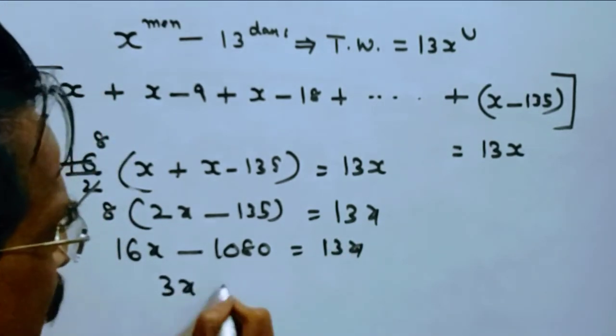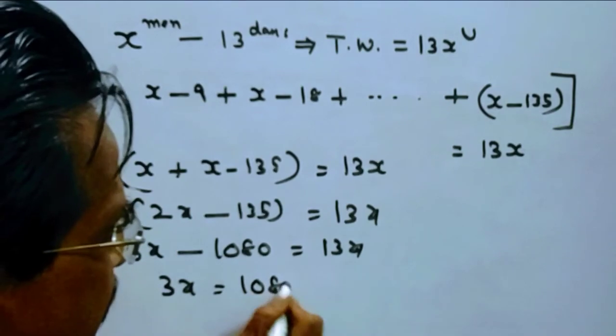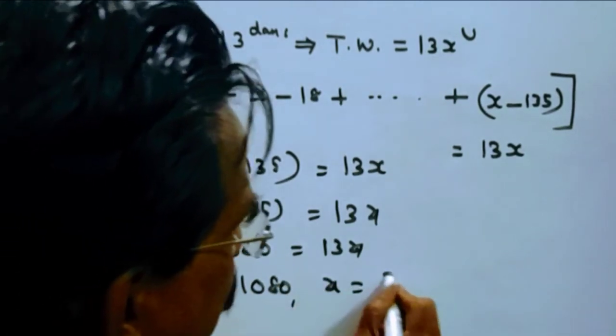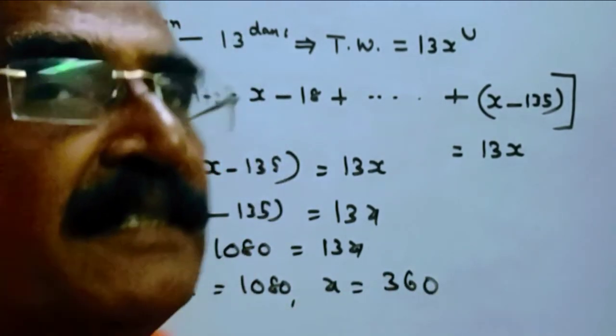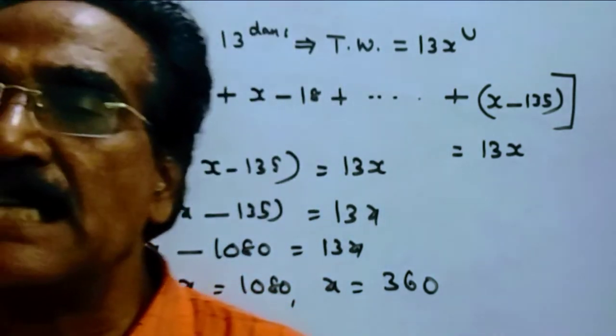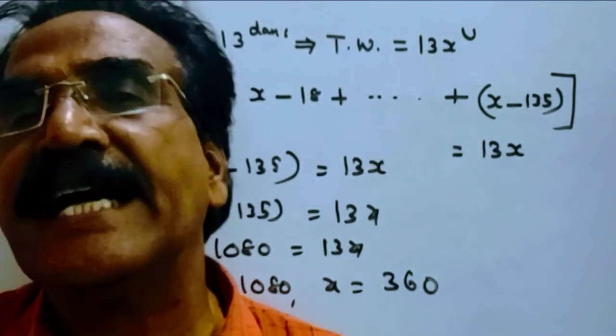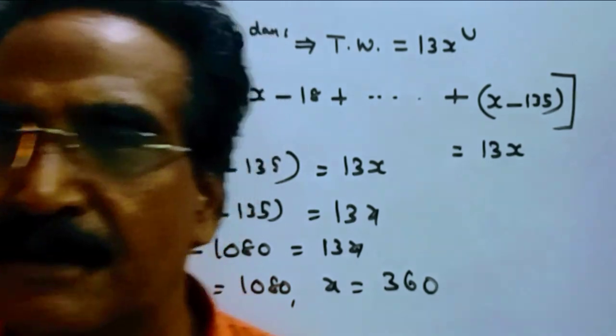Friends, 3X is equal to 1080, so X is equal to 360. Friends, so there were 360 men initially in the group. Thank you, have a nice day.